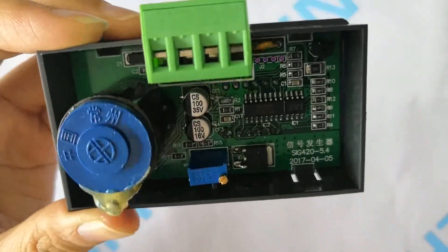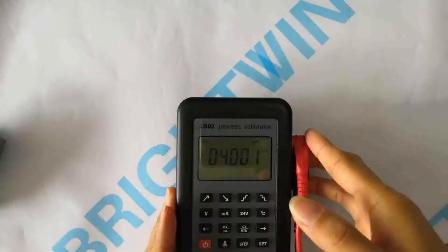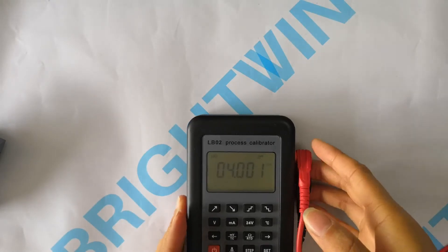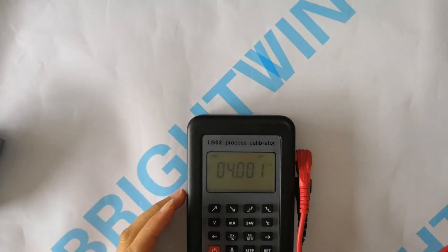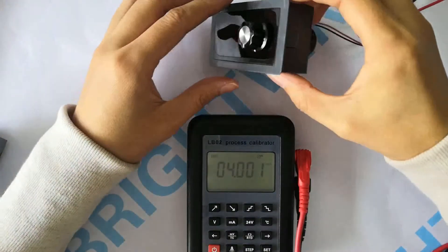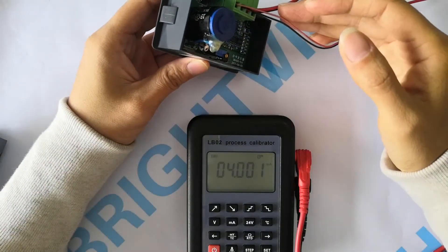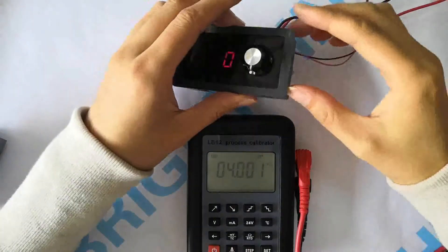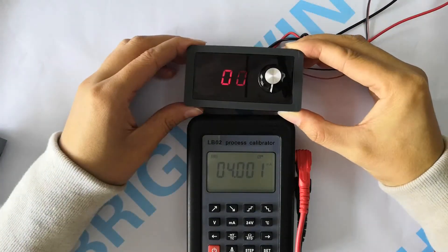Let's check the functions. Here we have the ALB-02 process calibrator to test it. First, connect the 24 volt power supply. Then connect the output with the ALB-02 process calibrator.